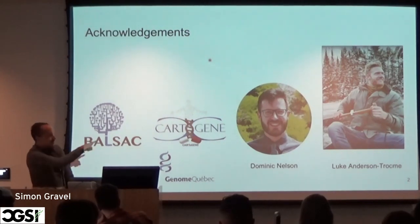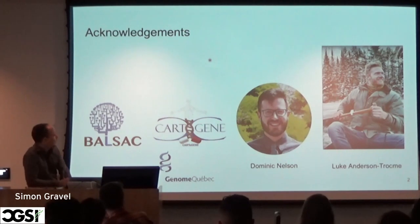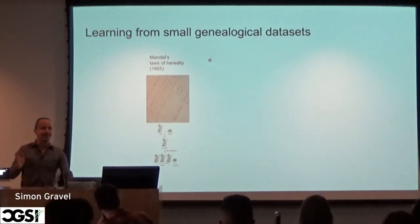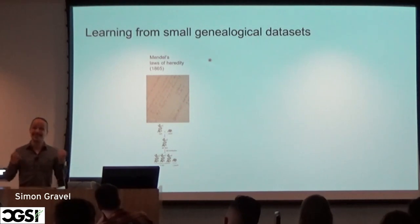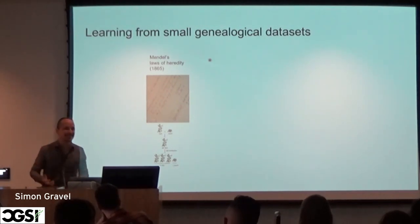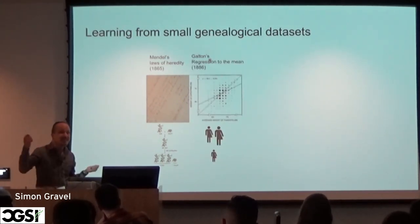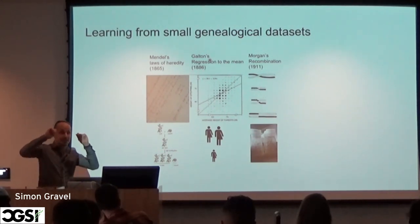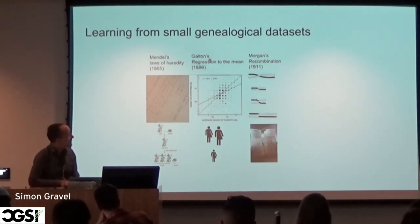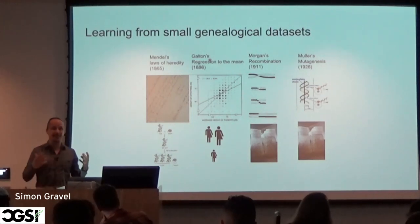Most of the research work has been done by the two students here, Dominic Nelson and Luke Anderson-Truckmay, and most of the data comes from actual humans who generously contributed to these two cohorts. I don't think I need to convince anyone that studying the similarities between parents and offspring or between family members has been important in genetics. A lot of the important discoveries — like Mendel's Laws of Inheritance, the idea of heritability of height by Galton, recombination of genetic traits from fruit fly crossings, and mutagenesis — have all been investigated by comparing parents and offspring.